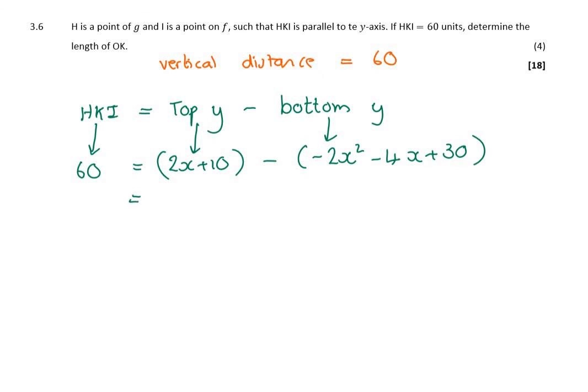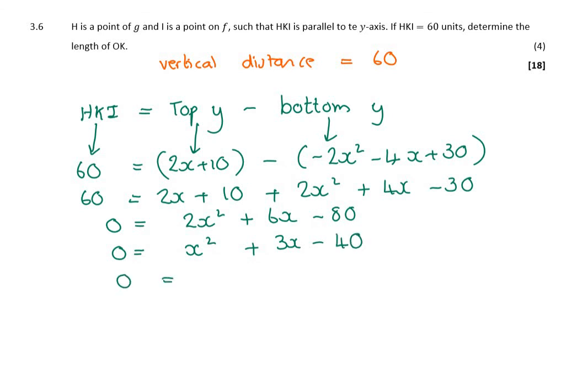So this just becomes a quadratic equation. So if I solve it very quickly: 60 = (2x+10) - (-2x² - 4x + 30). So make one side equal to 0: 0 = 2x² + 6x - 60, so it's -80. And then either factorize out the 2 or divide by 2 to make your life easier. And then if you're struggling to factorize, don't forget you can use the formula. But always show your substitution into the formula. So I'm actually going to say (x+8)(x-5). And so I get x = -8 or x = 5.